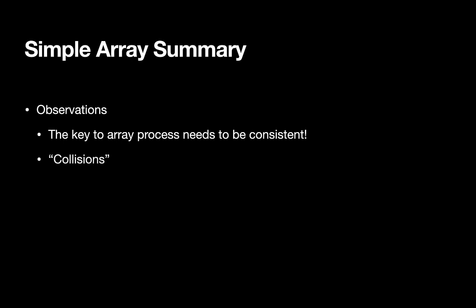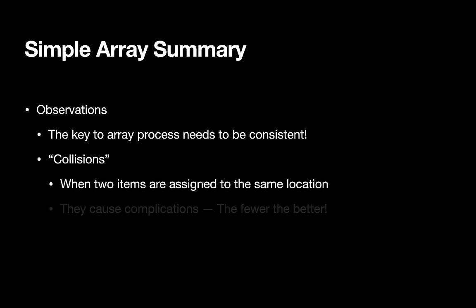Let's summarize some of the findings from our simple array approach. Some observations. The key needs to be consistent. If our process tells us an orange belongs in box three, it always needs to tell us an orange belongs in box three. Or at least it needs to be consistent with where the orange is actually at, at the current instant. We also encountered this problem of collisions, where multiple things get assigned to the same array location. So this caused some complications. And the fewer times this happens, the better. Ideally, we would like every item assigned to a distinct location with no collisions whatsoever.